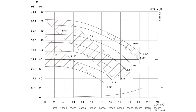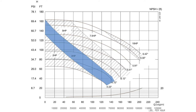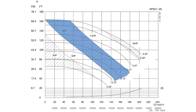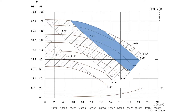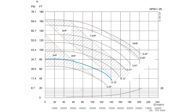Because some pumps can operate at a range of horsepower, curves may include additional information to account for the range of a pump's performance. This curve features a pump that can operate from 2 to 10 horsepower depending on the desired performance. On this graph, each curve represents a typical impeller size for this pump, ranging from 4.33 inches to a full size 6.42 inch impeller.